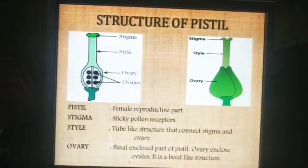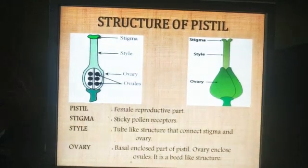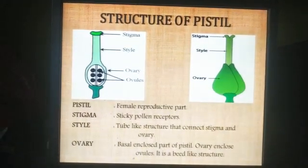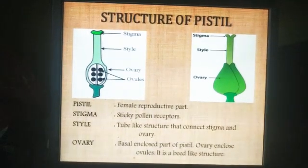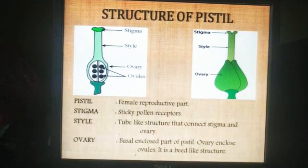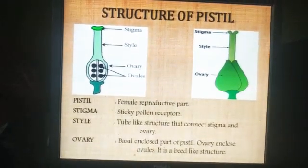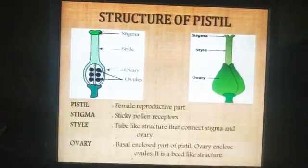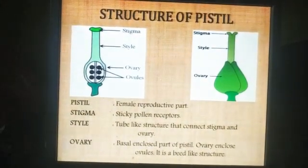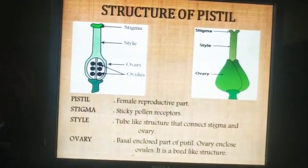Next, let us see the structure of the pistil. The pistil has three distinct parts: the ovary, the style, and the stigma. The stigma consists of sticky pollen receptors. The style is a tube-like structure that connects the ovary and the stigma. The third part, the ovary, is the basal enclosed part of the pistil.